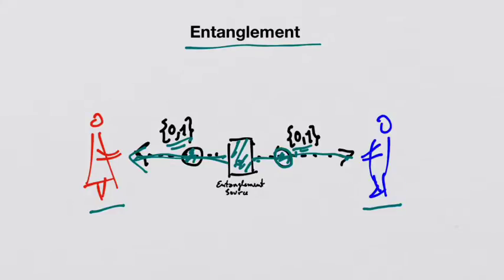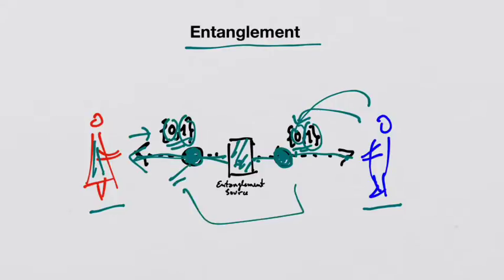Now, as soon as, let's say, Bob measures the particle when it arrives to him and finds out that this is one, then when Alice measures the entangled particle, it will also be one. If he measures zero, her measurement will be zero, and vice versa. If she measures her subatomic particle first, whatever she measures will be consistent with whatever Bob is measuring afterwards.